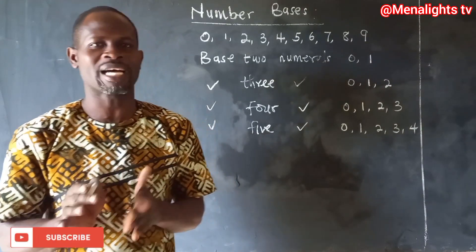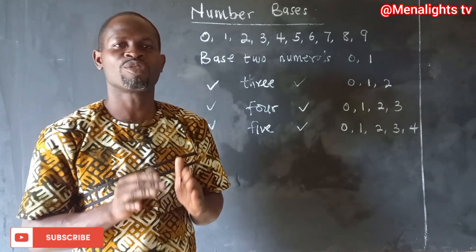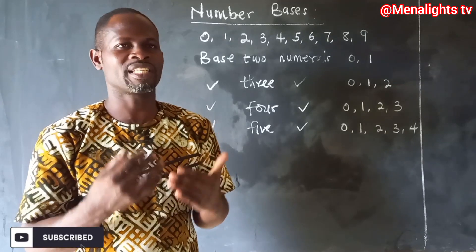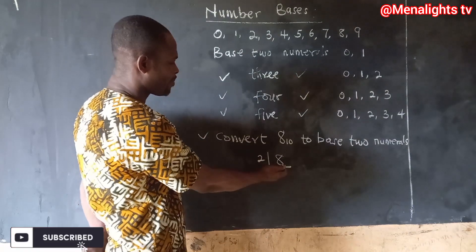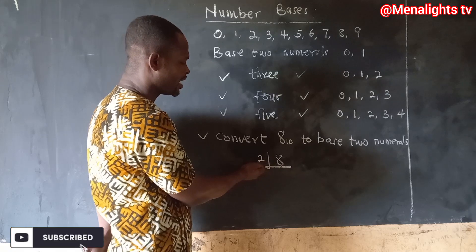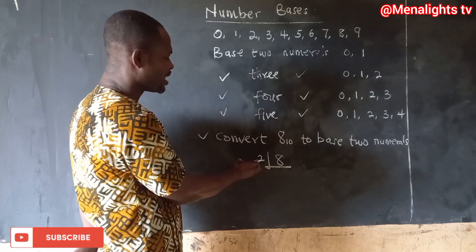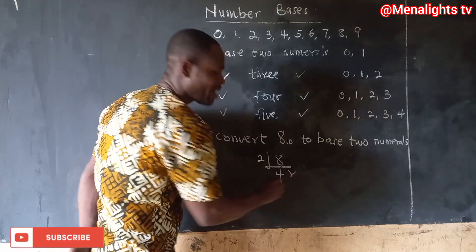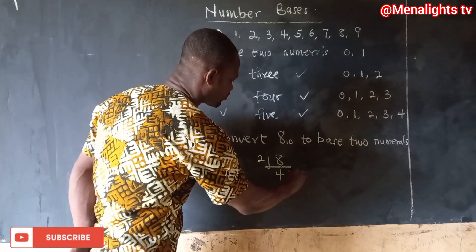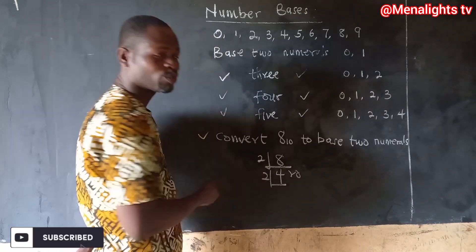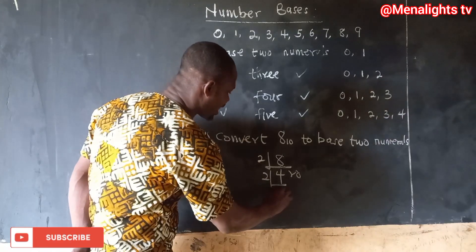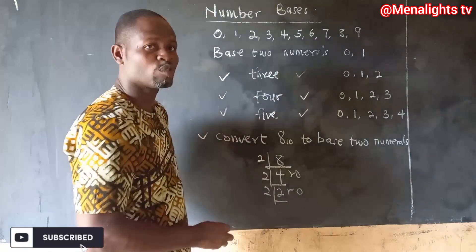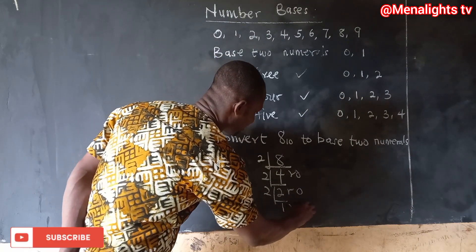When you are asked to convert from base 10 to another base, what you do is divide the base 10 number by the base you are converting to. For example, converting 8 base 10 to base 2: two goes into eight four times with a remainder of zero, then two goes into four two times with a remainder of zero, then two goes into two one time with a remainder of zero.